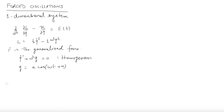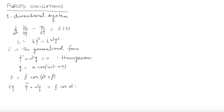Now I want to assume a sinusoidal force, so I will take the generalized force f to be some constant f times cos(γt + β). The frequency of the external agency I take to be γ, and our equation of motion is now q̈ + ω²q = f·cos(γt + β). Note I have taken different phases α and β here; you can choose one of them to be zero.